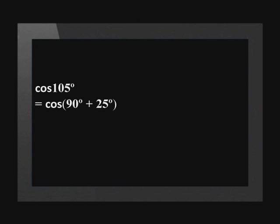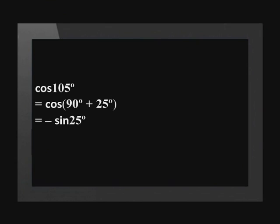Let's try the next one: cos(105°). This also lies in the second quadrant. There are two things we need to change in this ratio. Firstly, we need to change cos to sine. Then we need to change the angle to 25. We'll use co-function reduction to change cos to sine. To change cos to sine, we need to write the angle as 90 + 25 degrees. Remember that cos is negative in the second quadrant. This means that when we change cos to sine, sine will be negative. This reduces to negative sine(25°), which is negative b.